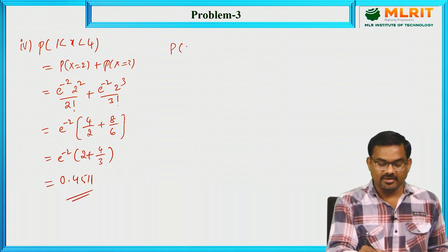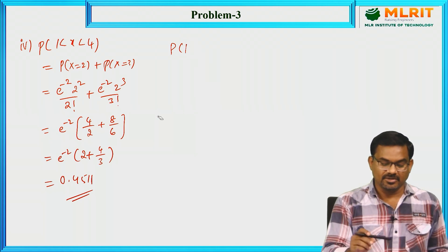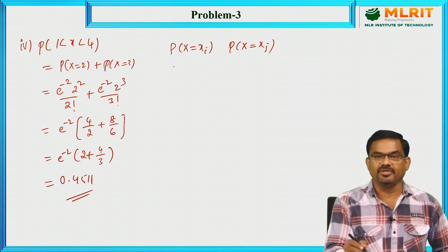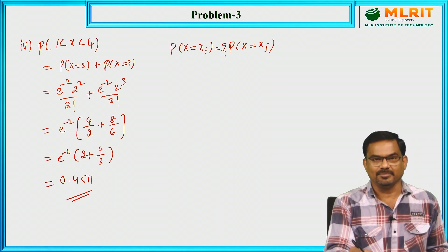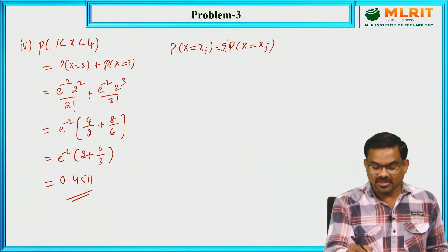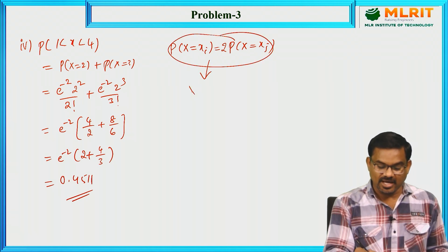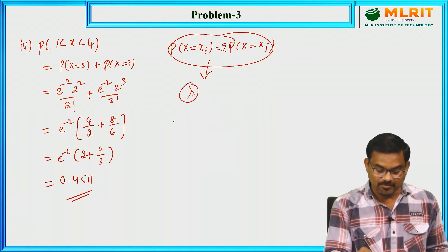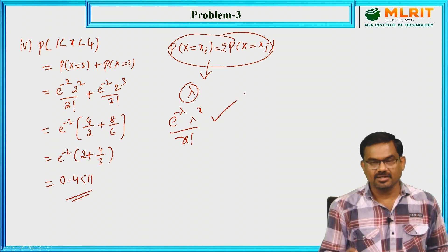If the relation between any two successive values — for example, P(xi) and P(xj) — is given, such as equal, two times, three times, or one-third, we can use that relation to calculate the value of λ. And if we have the value of λ, then using the Poisson formula e^(−λ) · λ^x / x!, we can calculate any given probability.